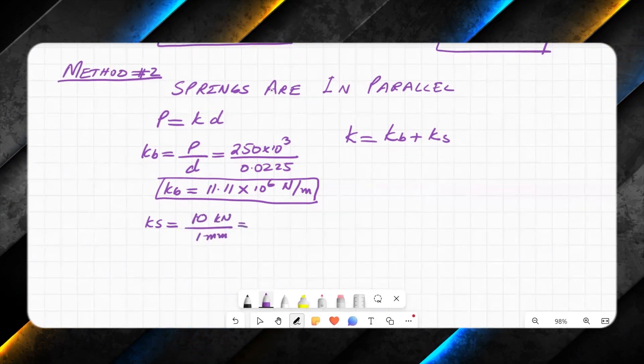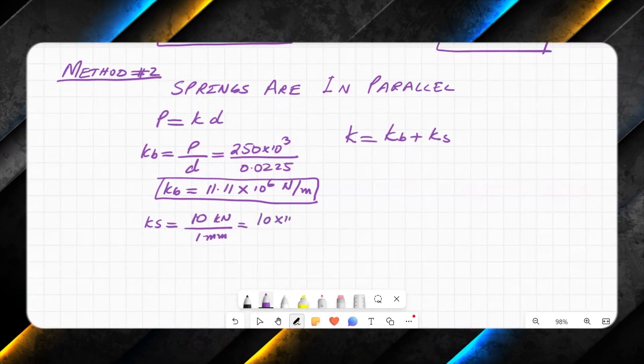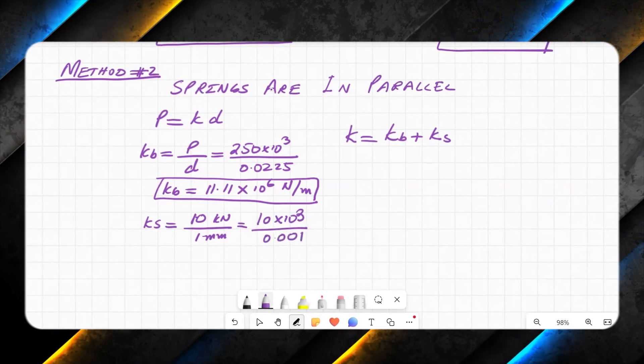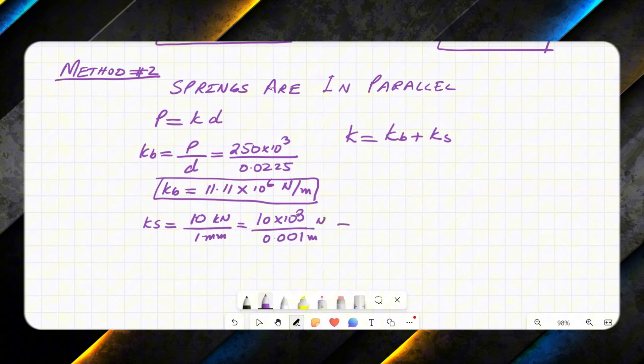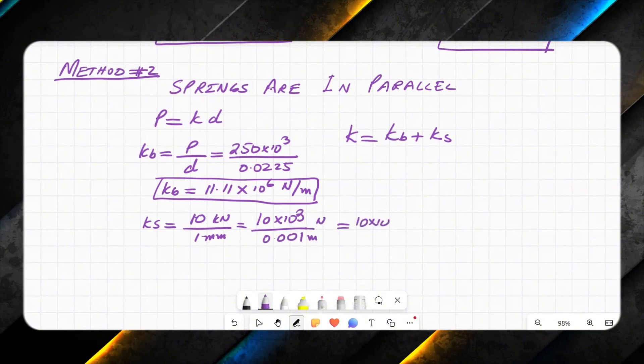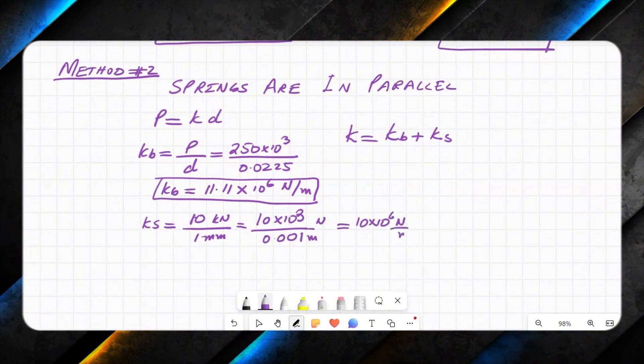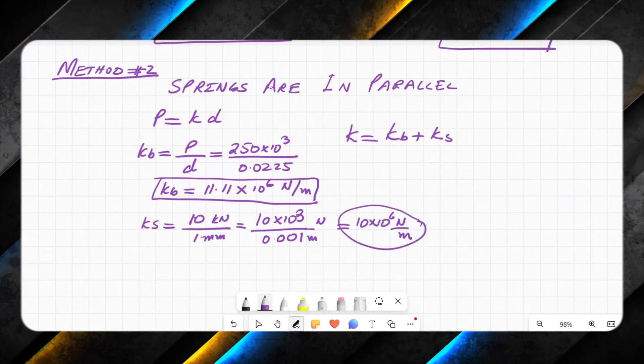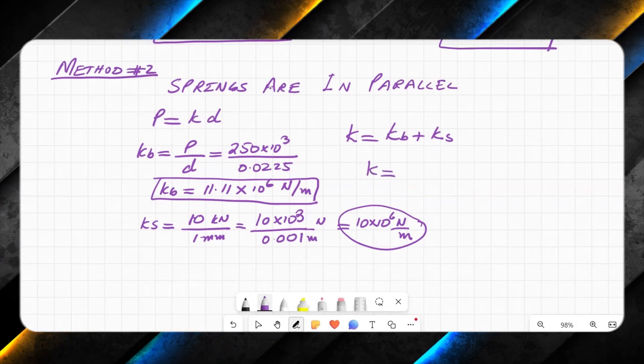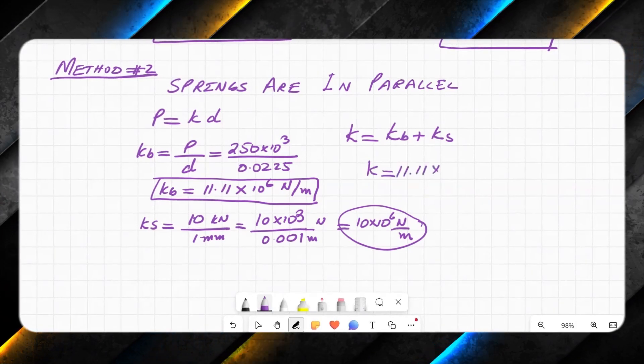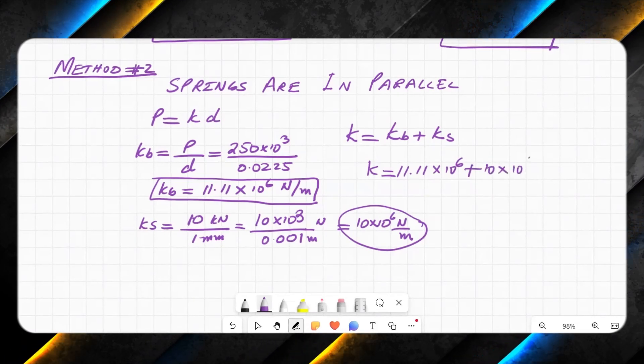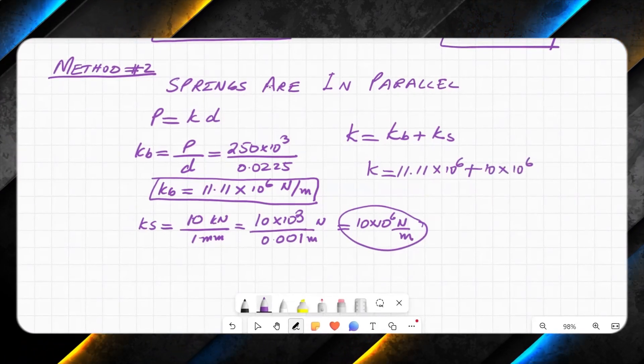And I will find out ks as well. Ks we already know. Ks is equal to 10 kilonewton in one millimeter—I can say 10 × 10³ divided by 0.001 meters. This will give me 10 × 10^6 newton per meter. So I have these two values. If I put them back in here, I will get kb 11.11 × 10^6 plus 10 × 10^6.